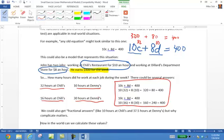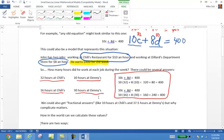You could even have fractional answers. Most of us do not like fractions and decimals, but if you need to find one, you could do that. You could have, for example, 10 hours at Chili's and 37 and a half at Denny's. The main thing is that they have to add up to $400. Why $400? Because I made the problem that way. It's that simple.